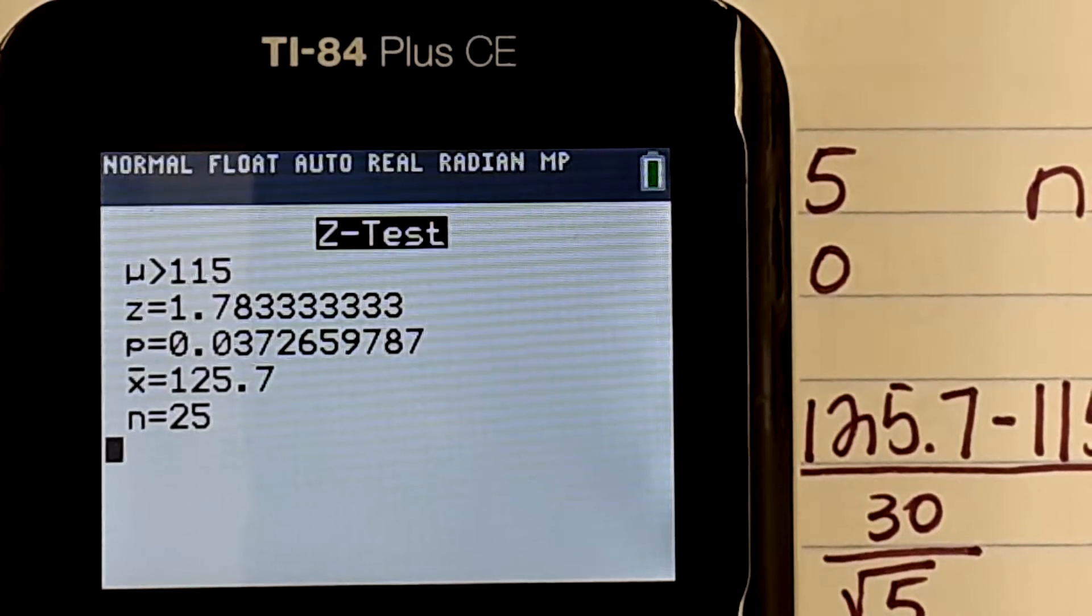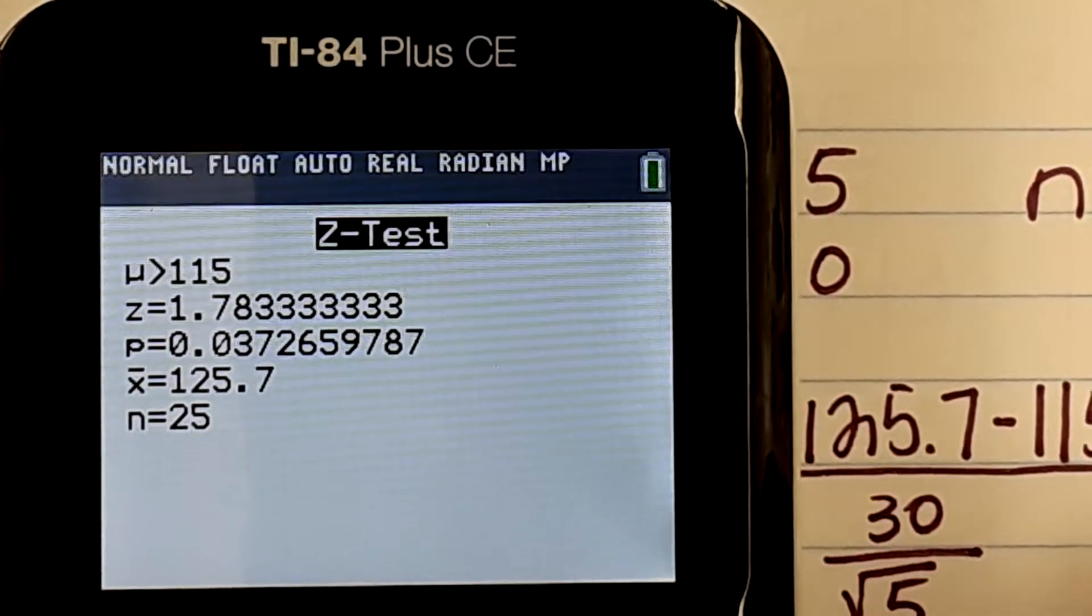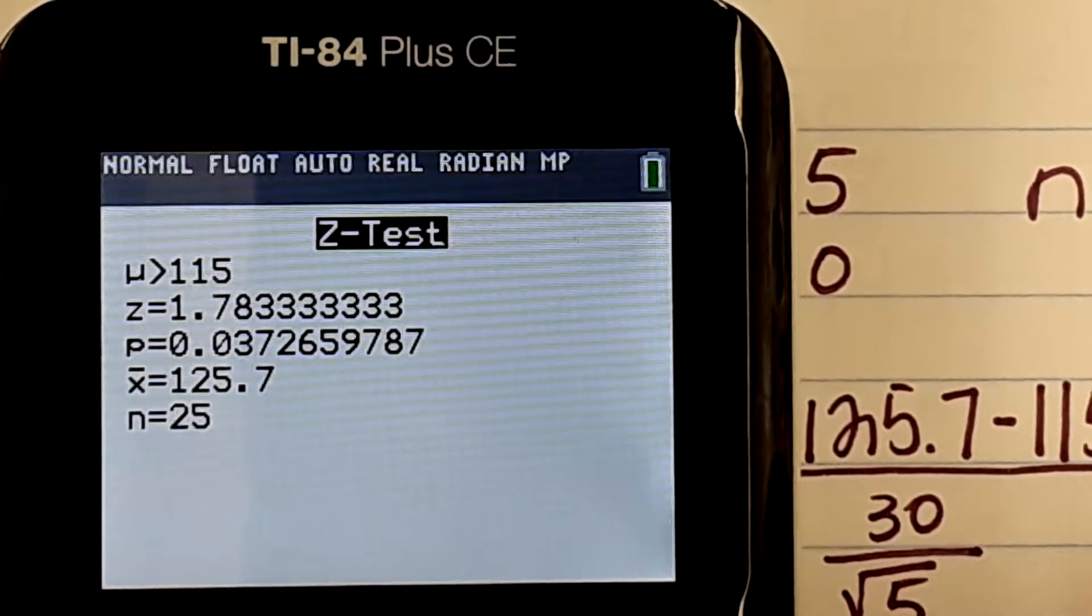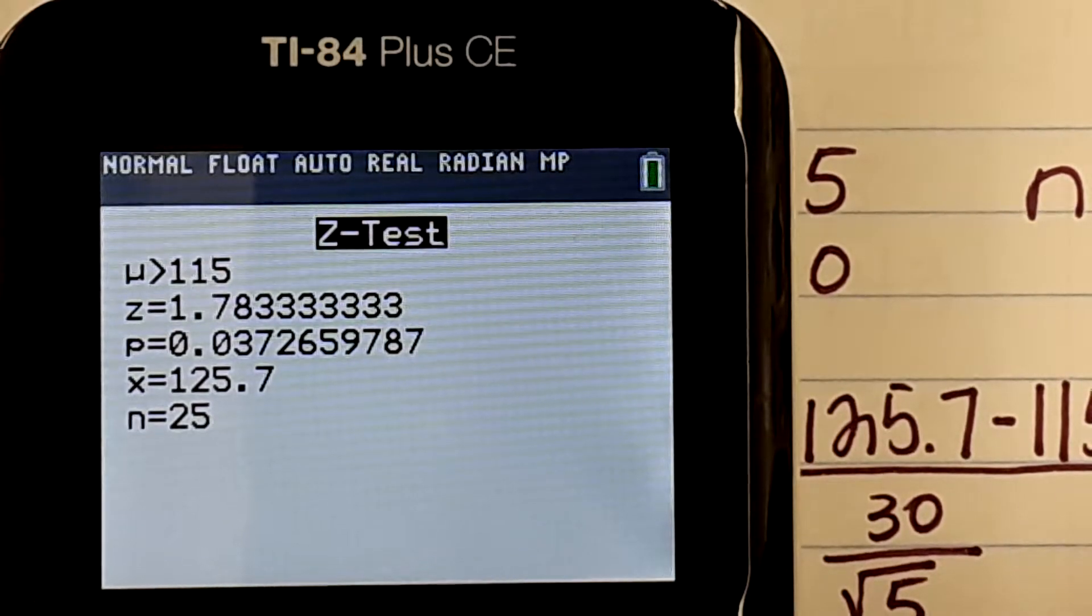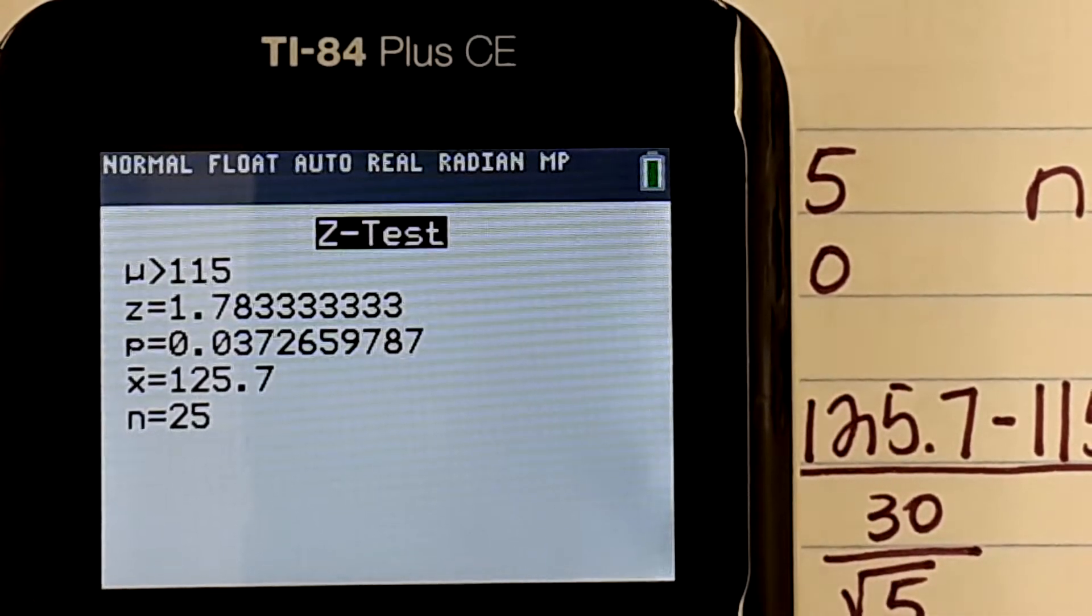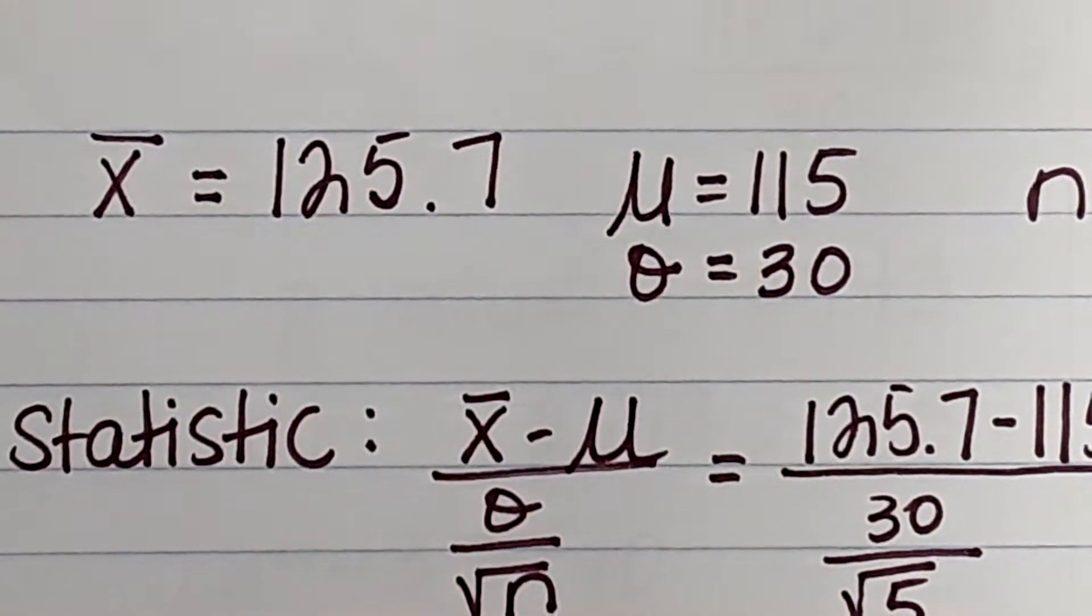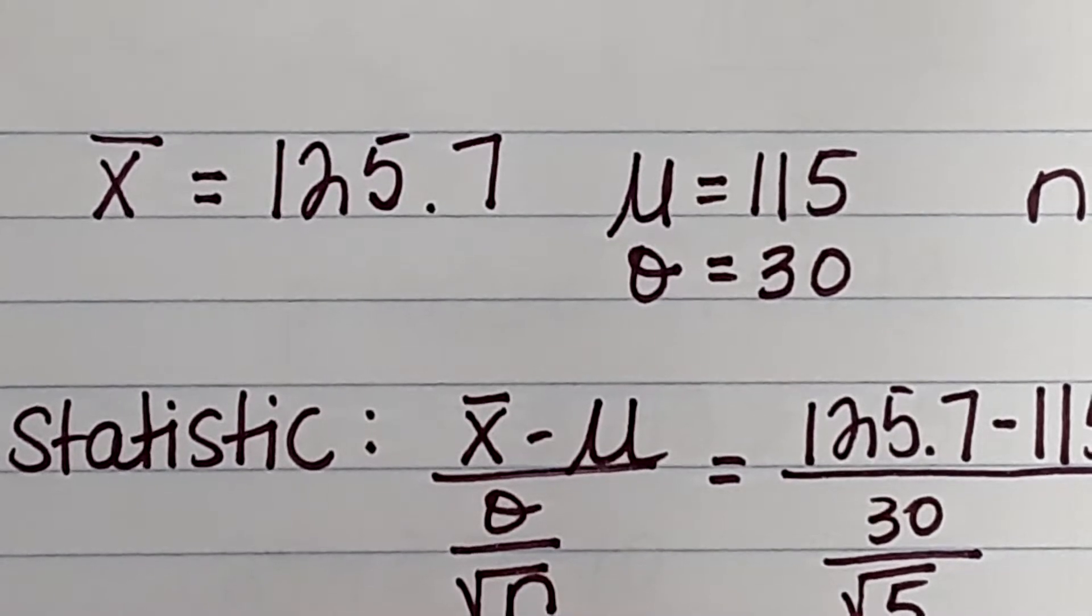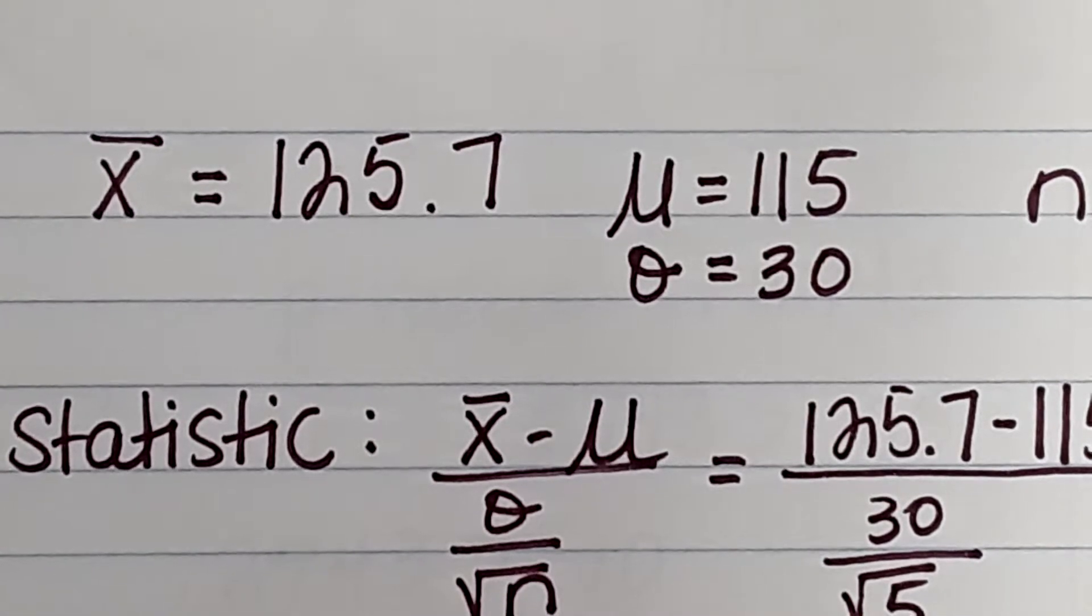So what is our z this time? What is our test statistic this time? And we'll put another three just because four points out. And then what is our p-value? 0.0373.